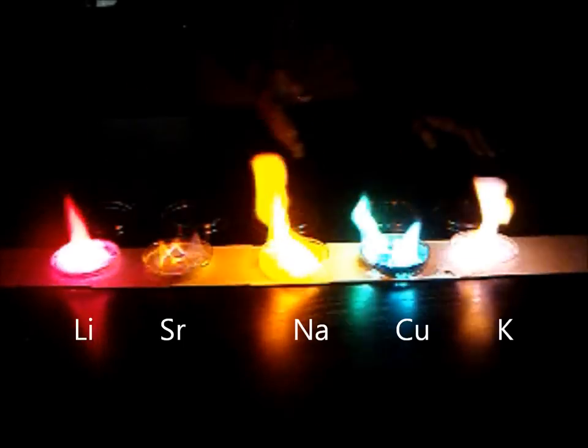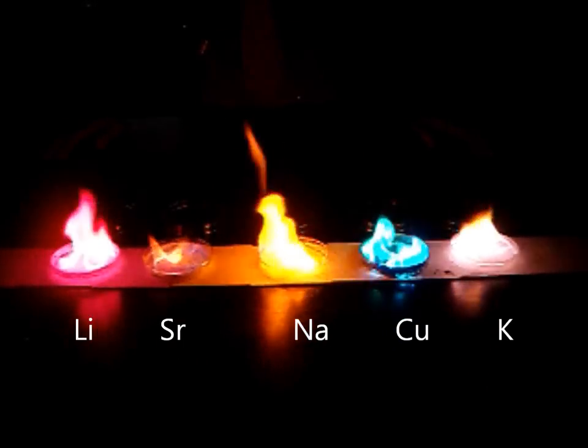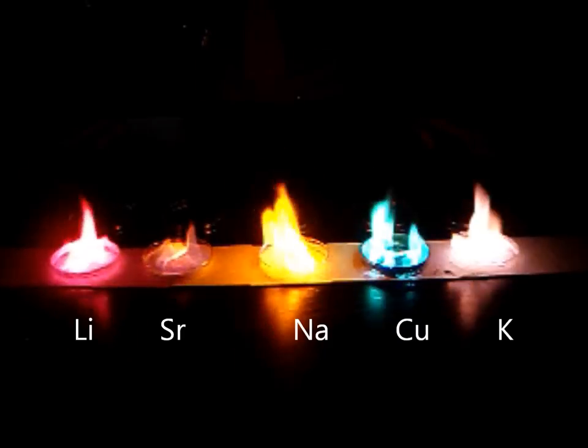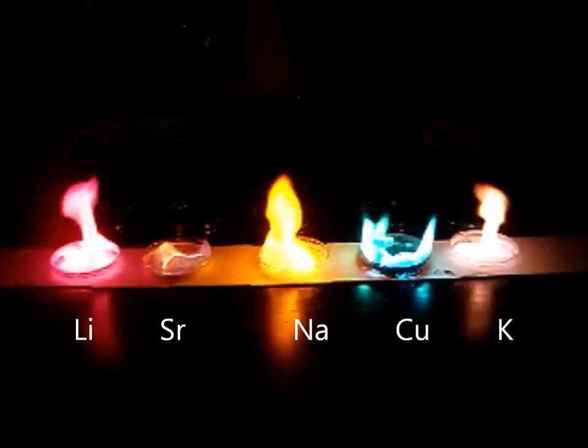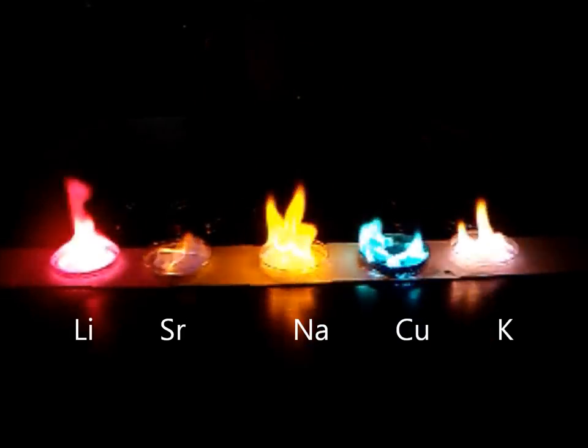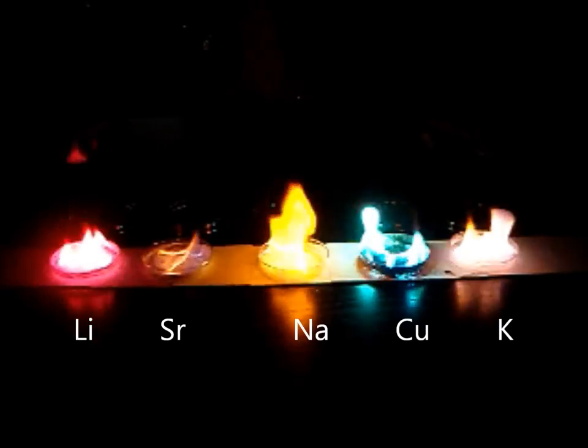So the reason why these five different metals give off five different colors of light is because they have different electron configurations. And their electrons have the possibility of falling from different levels to different levels.